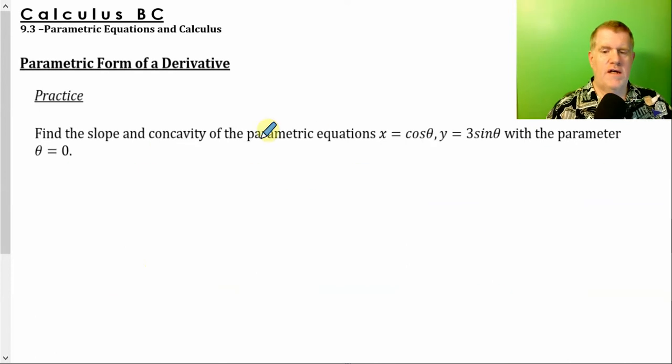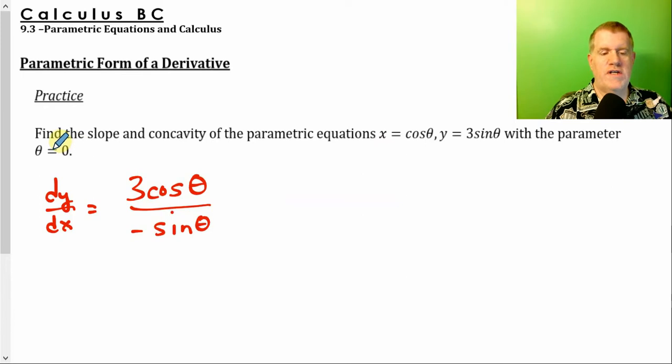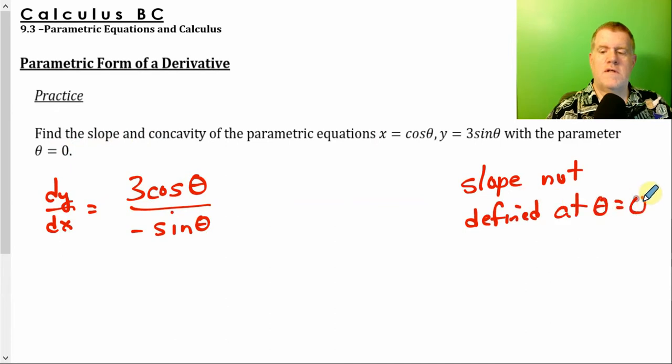Alright. Let's try another one. This time our parametric equation is defined x equals cosine theta and y equals 3 sine theta. So the first derivative. Take the derivative of y with respect to theta this time. So the derivative of y would be 3 cosine theta because the derivative of sine is cosine. The derivative of x is negative sine of theta. If you can plug in 0 for theta, you're going to realize that you're going to get a 0 on the bottom. So our slope is actually not defined at 0. Alright.